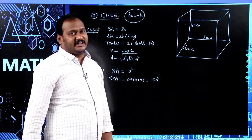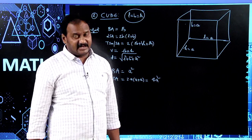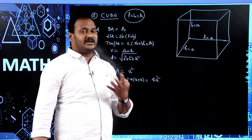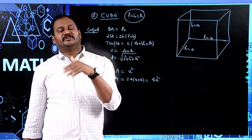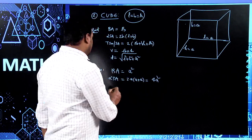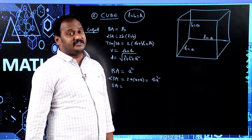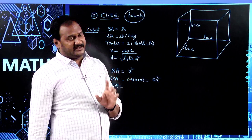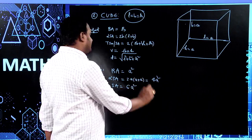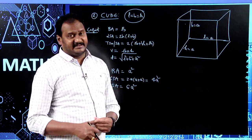All the faces of a cube are squares. Since there are 4 lateral surfaces, 4 areas of squares gives 4a² — the lateral surface area. Coming to surface area: how many faces does a cube have? 6 faces, and each face is a square. So 6 times the area of a square gives 6a² as the total surface area of a cube.